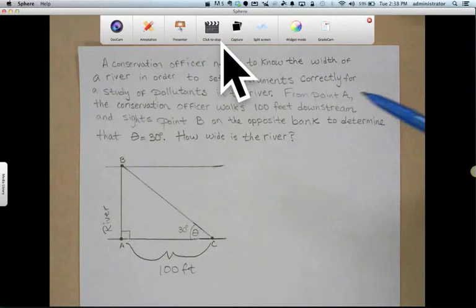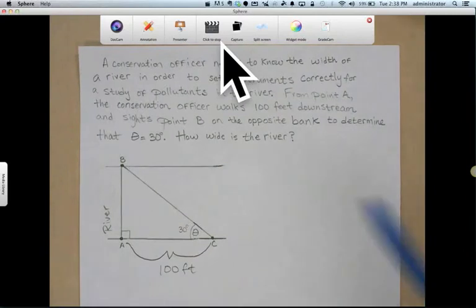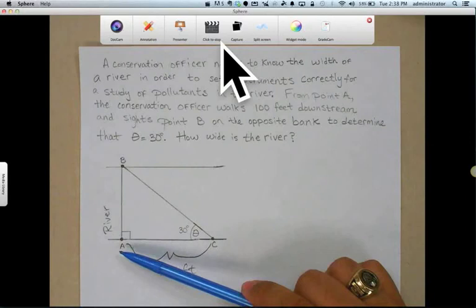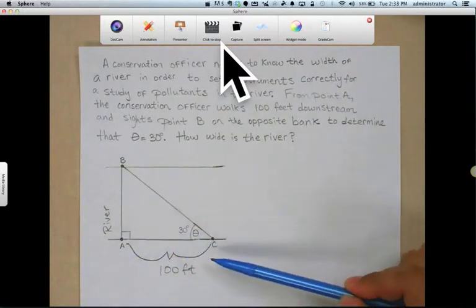A conservation officer needs to know the width of a river in order to set instruments correctly for a study of pollutants in the river. So from point A, here's point A, the conservation officer walks 100 feet downstream.